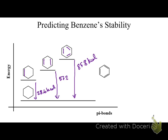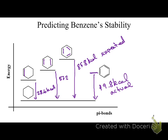So you'd predict that three double bonds would release 85.8 kcal. But when you actually measure the heat of hydrogenation for benzene, the number comes out to only 49.8 kcal — that's the actual value. The difference between the expected 85.8 and the actual 49.8 is about 36 kcal. That's the resonance energy — benzene is about 36 kcal per mole more stable than predicted.